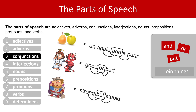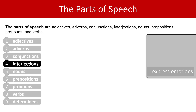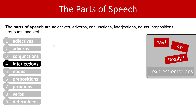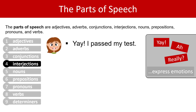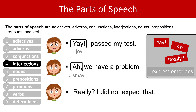Let's move on to interjections. Interjections express emotions. Some examples: Yay! Ah! Really? In sentences: 'Yay! I passed my test' — the interjection 'yay' expresses joy. 'Ah! We have a problem' — the interjection 'ah' expresses dismay or sadness. 'Really? I did not expect that' — the interjection 'really' expresses surprise.